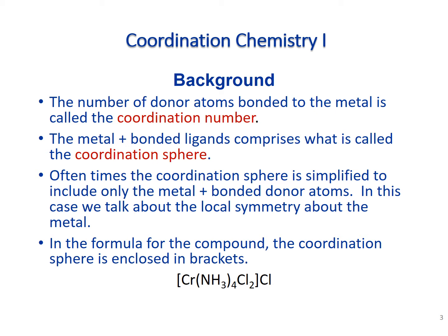There is chloride both inside and outside the brackets, and we need to treat those quite differently. One is actually coordinated to the chromium; the other is a counter ion. If we remove that outermost chloride — which has a negative one charge — that chromium-based complex ion would have a positive one charge associated with it. This is the common way in which we distinguish between inner sphere coordination and what's outside of those brackets.